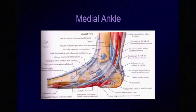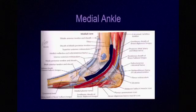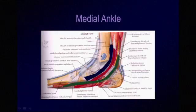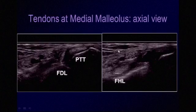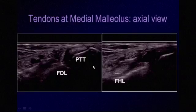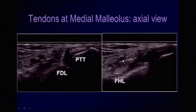Moving on to the medial ankle, we are looking at three tendons: the tibialis posterior tendon outlined in blue, the flexor digitorum longus tendon in red, and the flexor hallucis longus tendon in green. Between the digitorum and hallucis longus tendons are structures traveling within the tarsal tunnel, covered by the flexor retinaculum — the posterior tibial artery and veins, as well as the tibial nerve. On the axial view, we see the tibialis posterior tendon against the medial malleolus, adjacent to the flexor digitorum longus, with the tibial nerve and posterior tibial artery and veins visible in between.